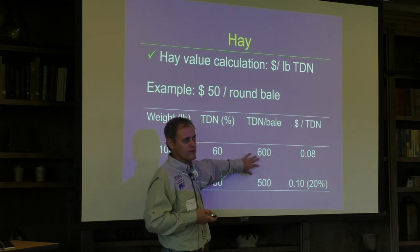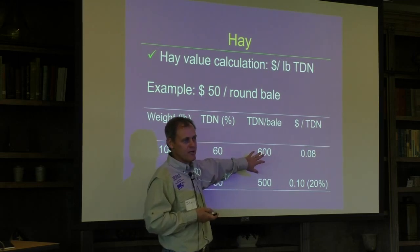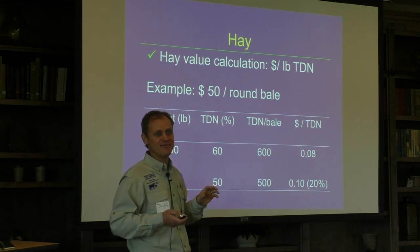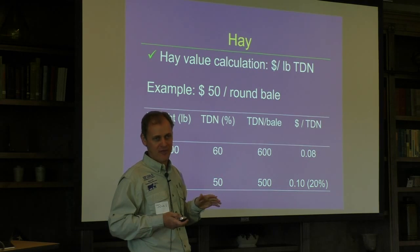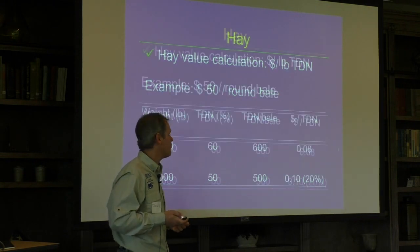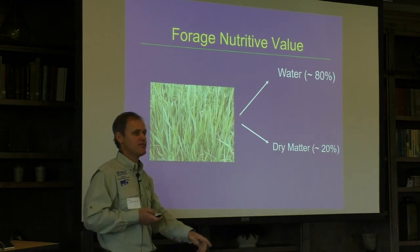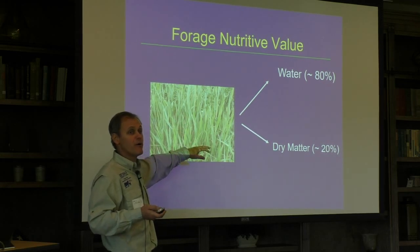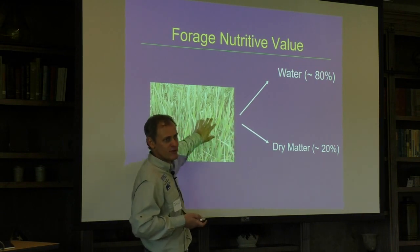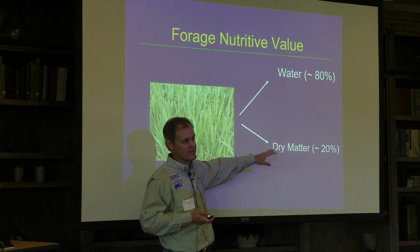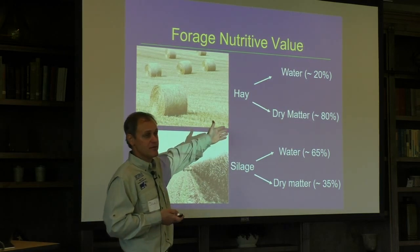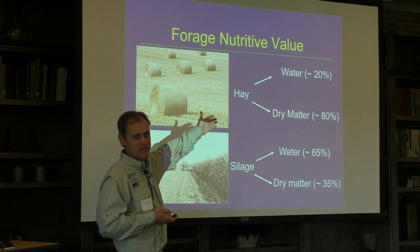We still sell hay as round bales or square bales, and we know the shape but nothing about the nutritive content. Nobody can guess if a bale is good or bad — the only way to know is testing. That's why we promote testing. A fresh forage like the one outside may have 80% water and 20% dry matter, which is where the nutrients are. Hay may be 80–90% dry matter, and we report nutritive value on a dry matter basis.